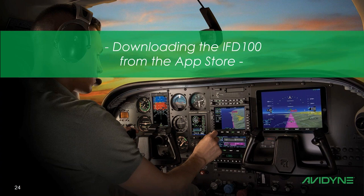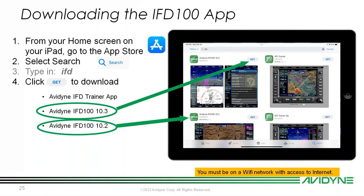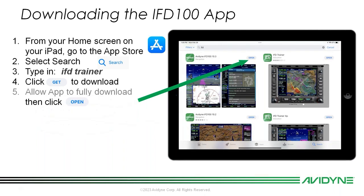Let's get into downloading IFD100 from the App Store. About late last year we released software version 10.3.0.2, and with that we had different IFD100 apps. There are two different versions still available on the App Store: IFD100 10.3 and IFD100 10.2. If you have not upgraded your software to 10.3 and are still running 10.2, you will need the IFD100 10.2 app. If you have upgraded to 10.3.0.2, you will need IFD100 10.3 to work with your panel-mounted IFD.